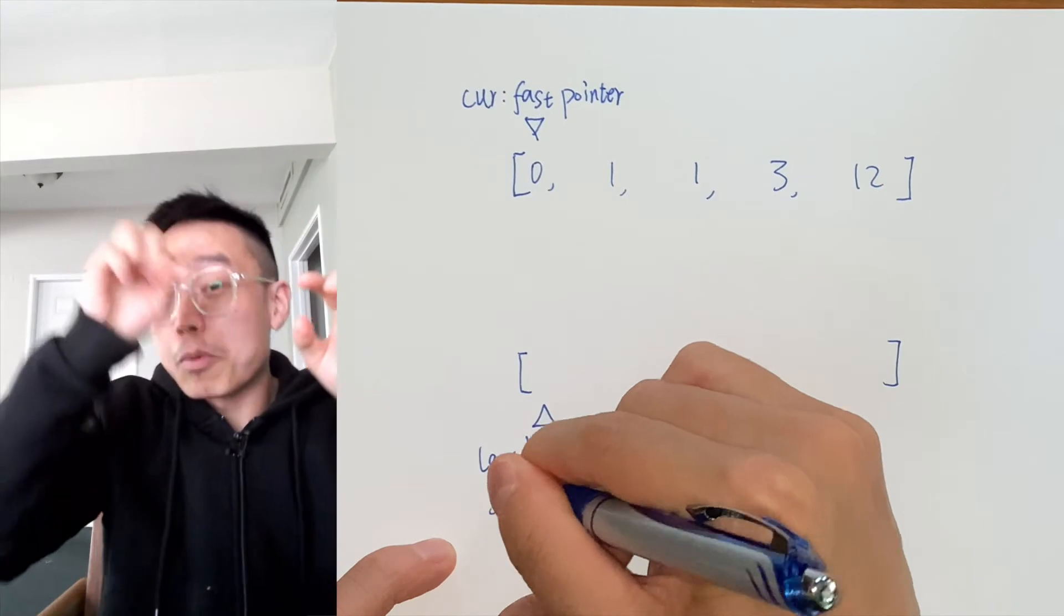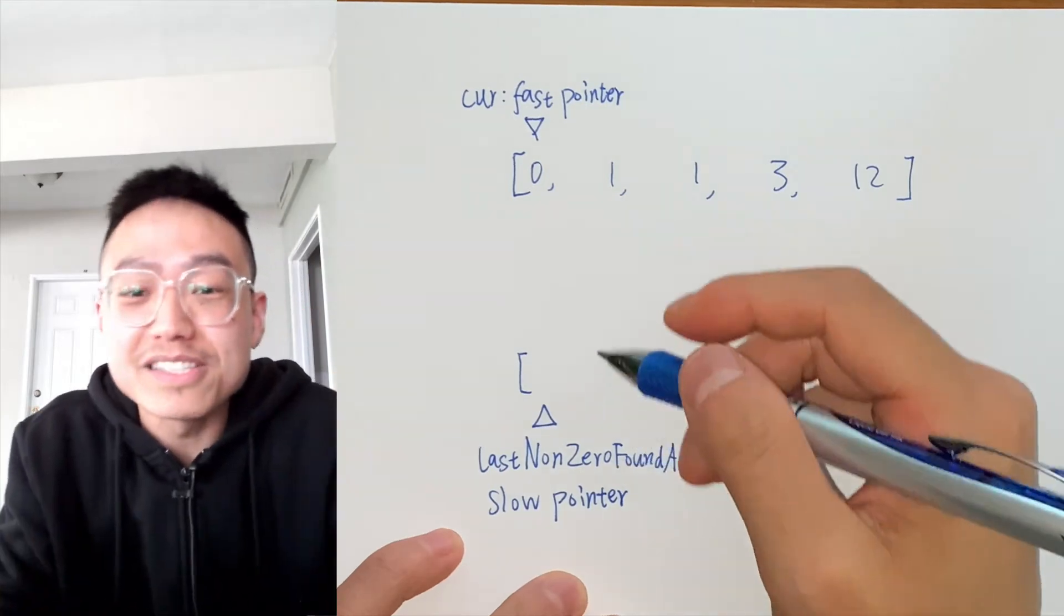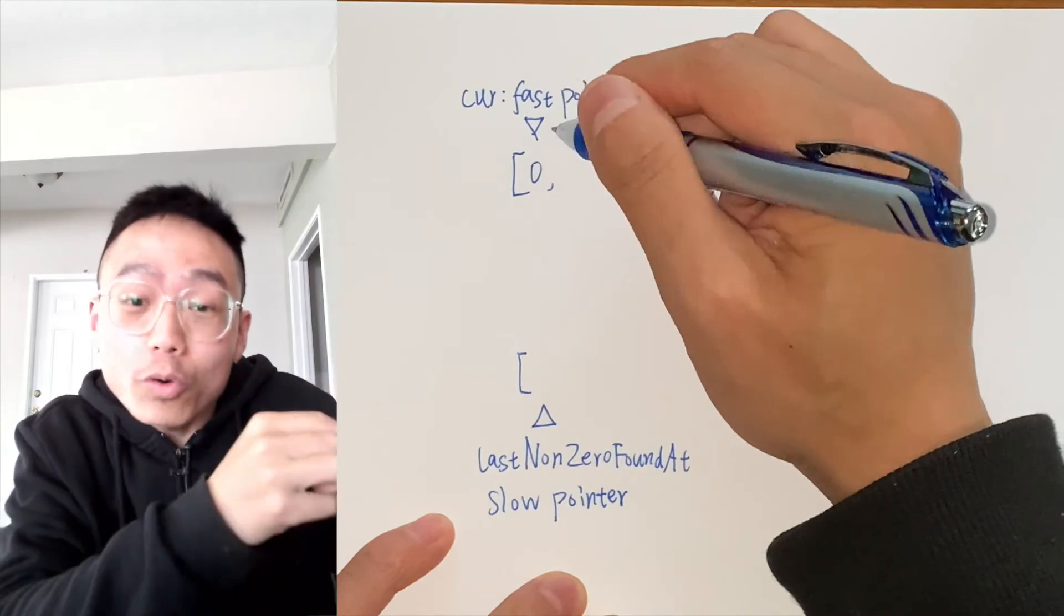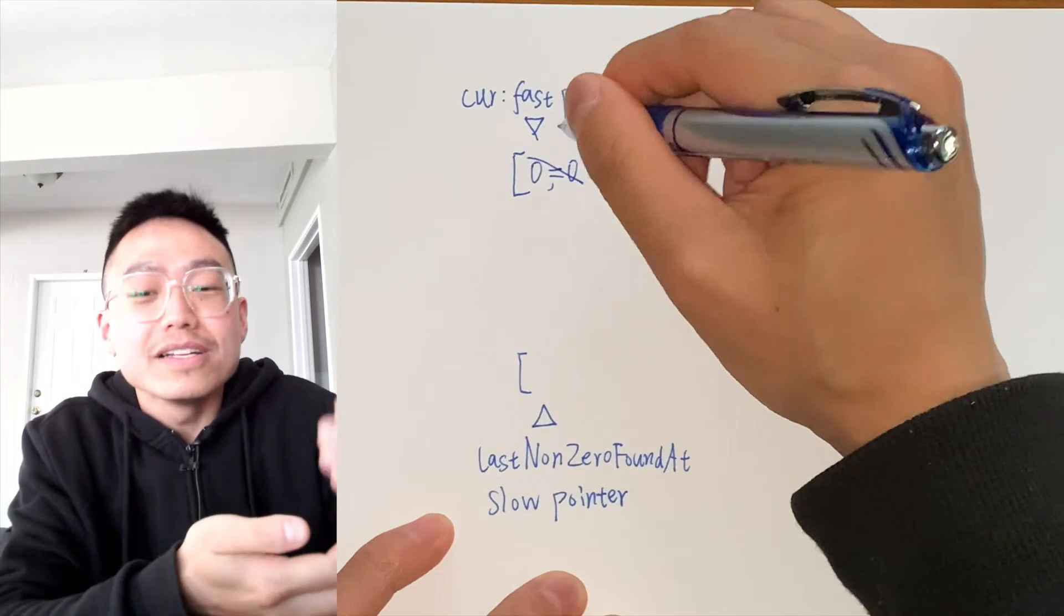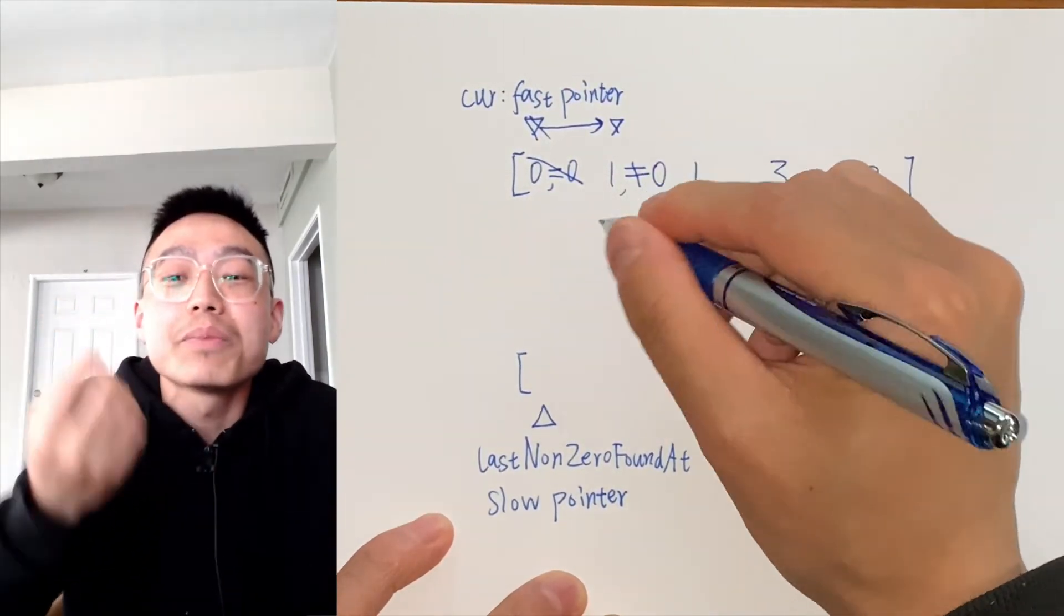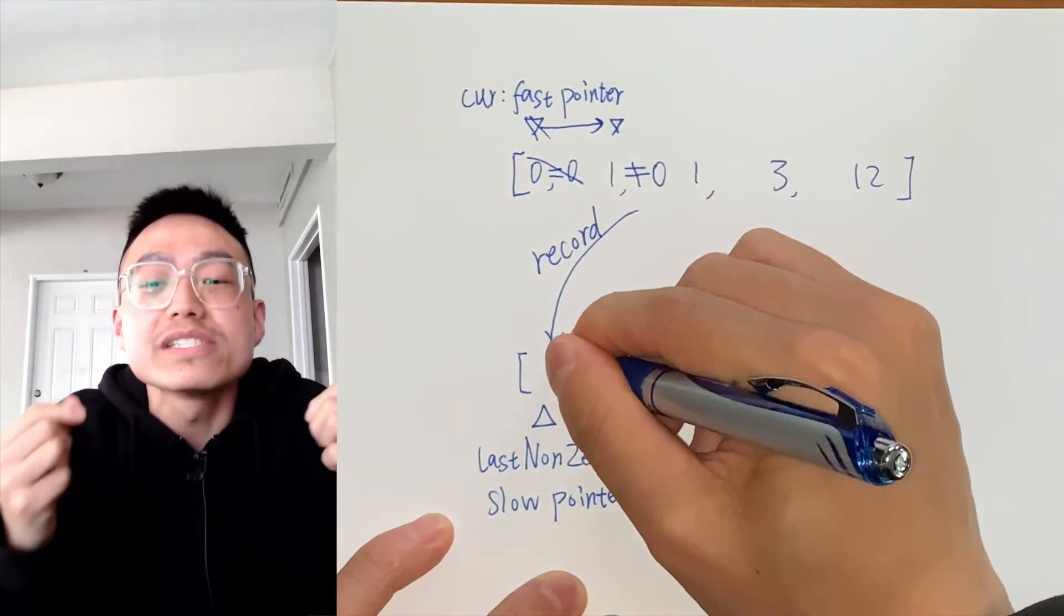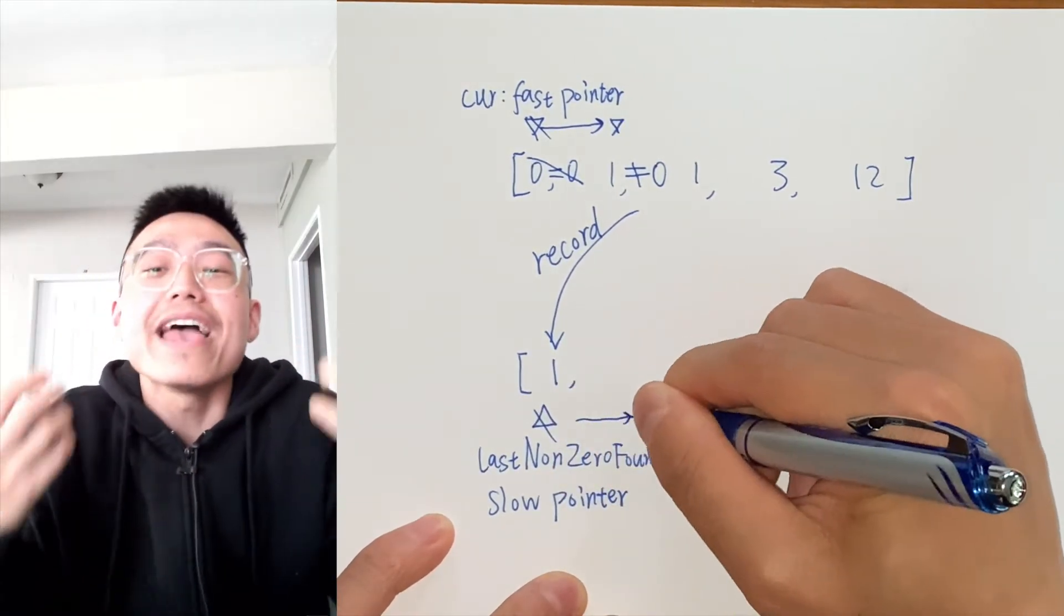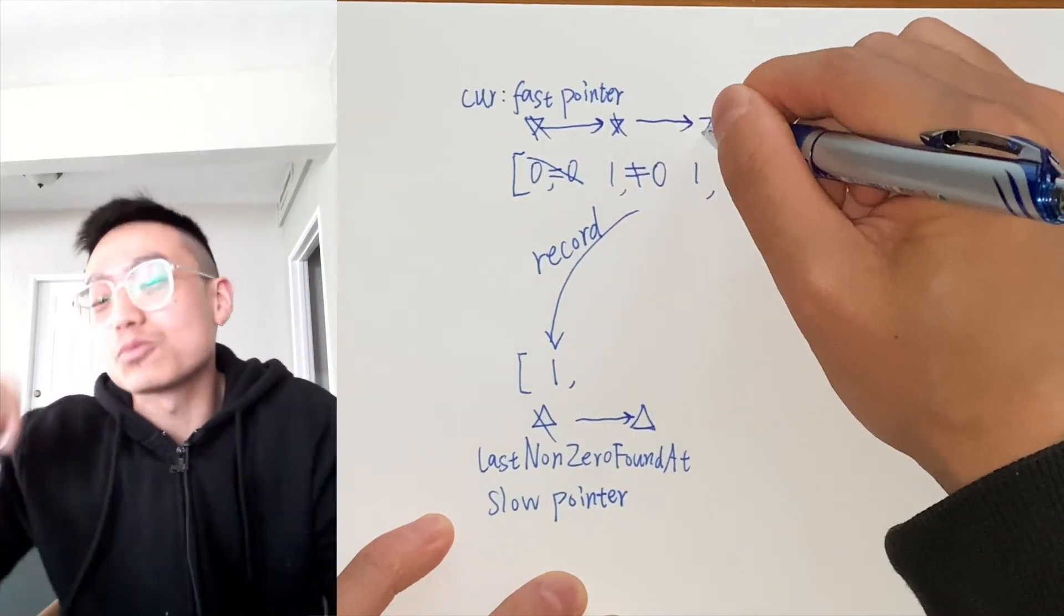This is a two-pointer approach. The first pointer, denoted by variable cur, does the job of processing new elements. If the newly found element is not a zero, we will record it just after the last found non-zero element. The position of the last found non-zero element is denoted by the slow pointer. We call the variable name lastNonZeroFoundAt.